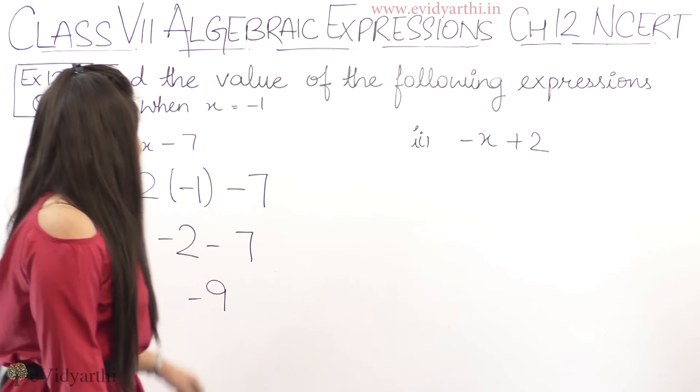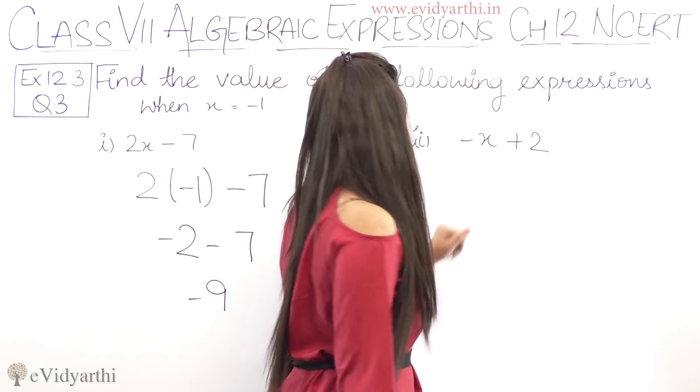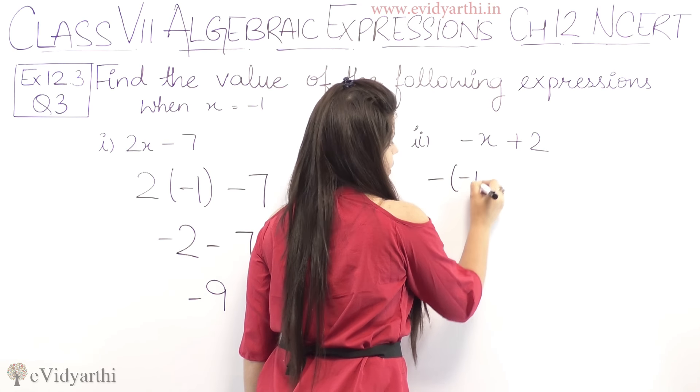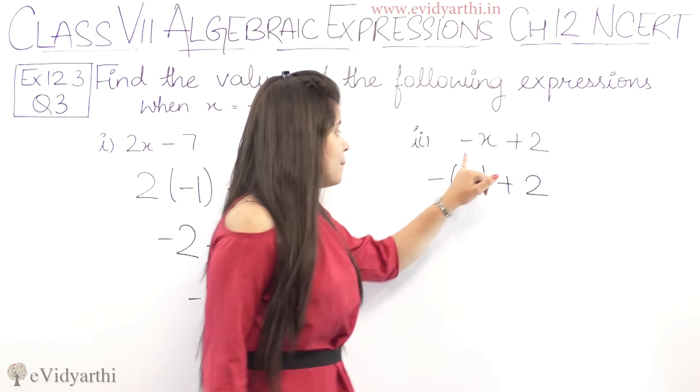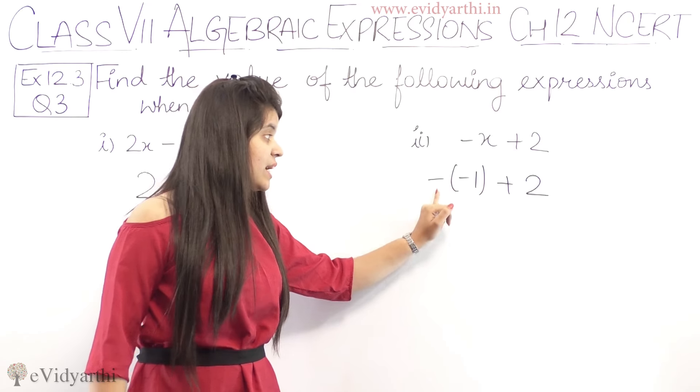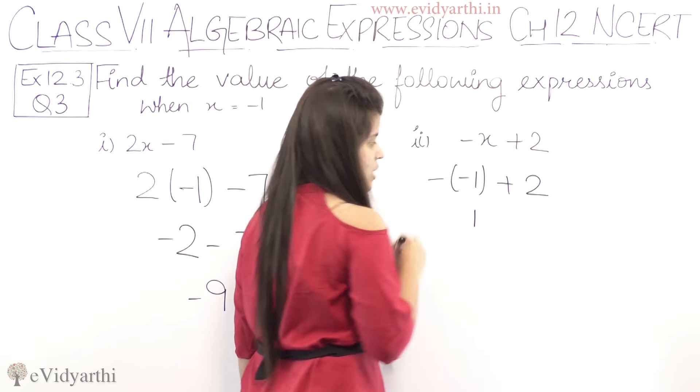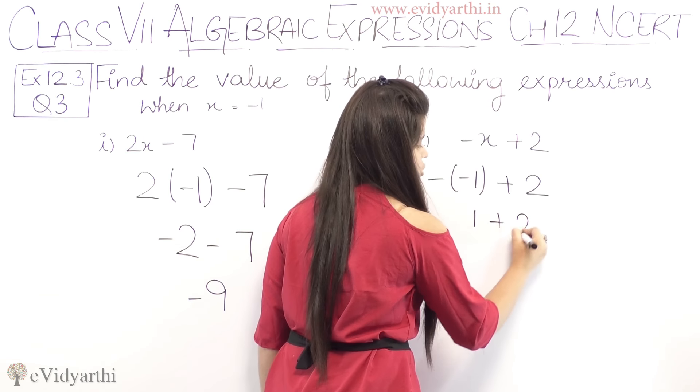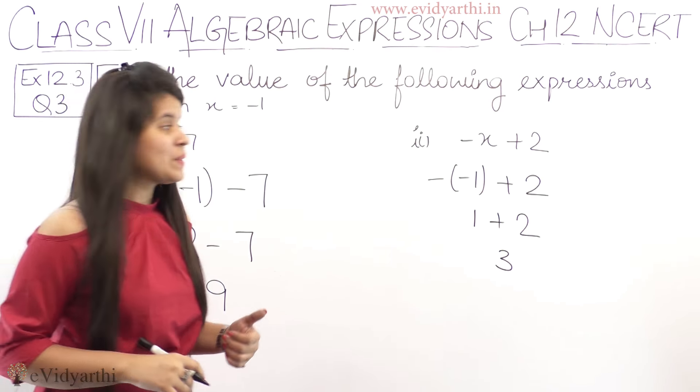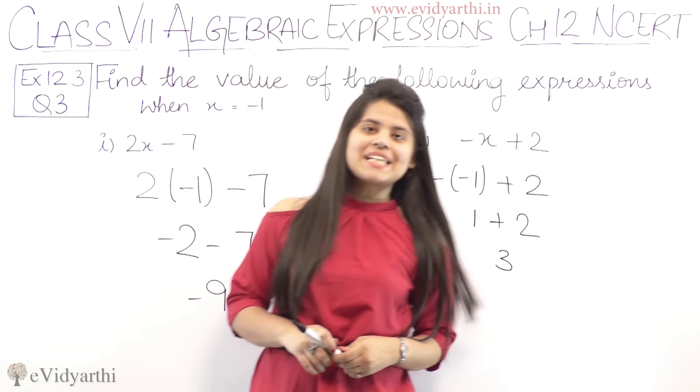Now coming to the second part, minus x plus 2. Minus x ki value minus 1. So minus 1 plus 2. Now minus x ka minus, x ki value minus 1 hai, so it becomes minus minus 1. Now minus minus plus, so 1 plus 2, that is 3. So the answer is 3. So this was part number 1 and 2 of question number 3.